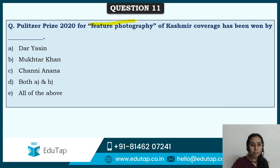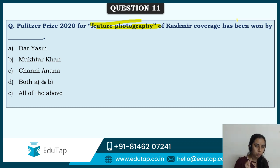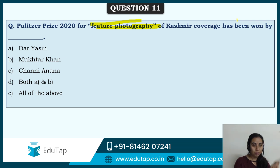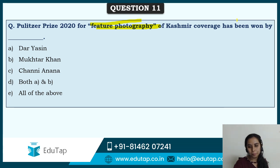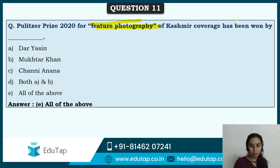Pulitzer Prize 2020 for feature photography of Kashmir coverage has been won by three photographers — Daria Asin, Mukhtar Khan, and Channi Anand. All three have been given this award for their coverage of the Kashmir issue. Pulitzer Prize is given for journalism. This is important along with Booker Prize, World Food Prize, and Richard Dawkins Award — all of these are important awards to remember.